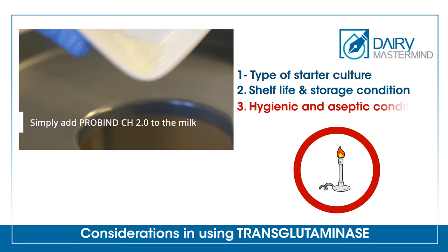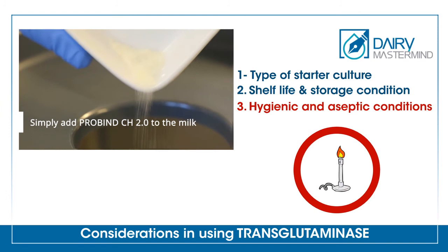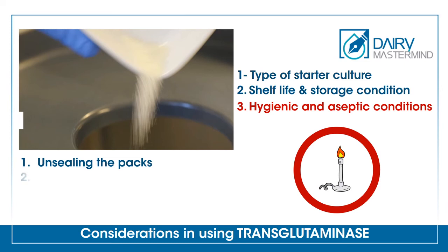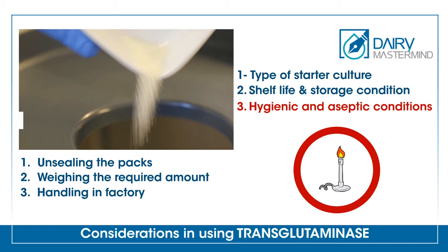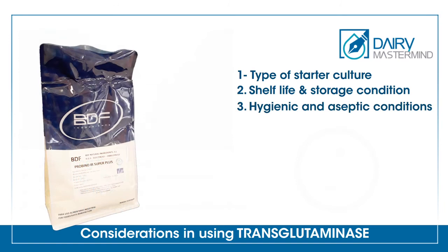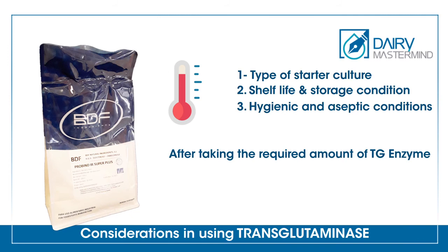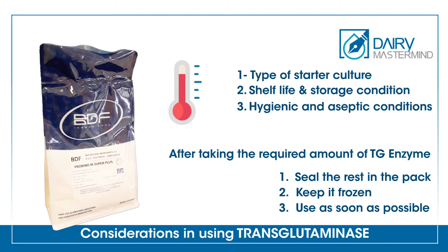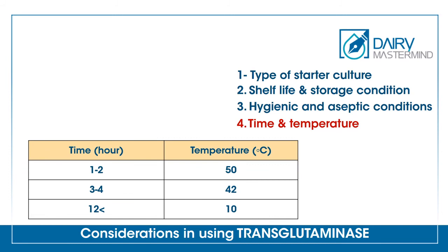To prevent cross-contamination, hygienic and receptive conditions must be considered in four steps when using TG enzyme: unsealing the packs, weighing the required amount, handling in factory, and adding TG enzyme in the production line. A hermetic pack can be kept at ambient temperature. After unsealing and taking the required amount of TG enzyme, seal the rest in the pack to cause minimum exposure to oxygen, and keep it frozen and use as soon as possible.